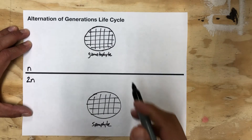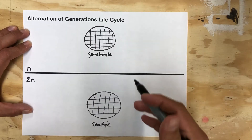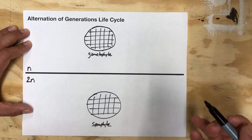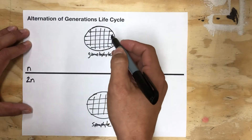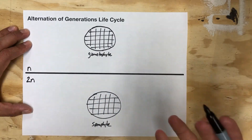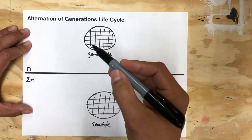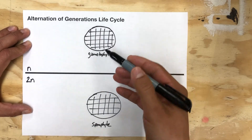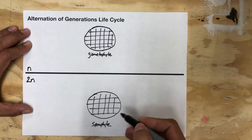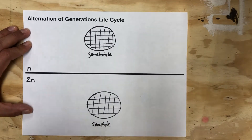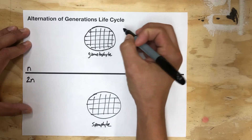The next step is to draw all the things each generation is going to make. I'm going to start with the gametophyte — you could start anywhere because it's a circle. The gametophyte is called the gametophyte because it makes gametes, and the sporophyte is called the sporophyte because it makes spores.